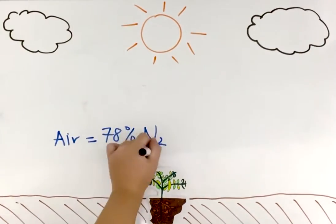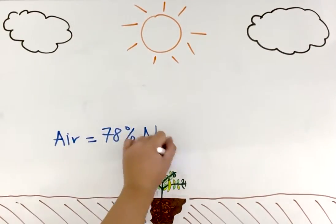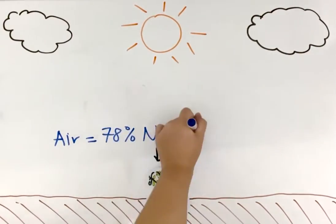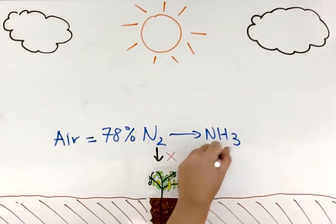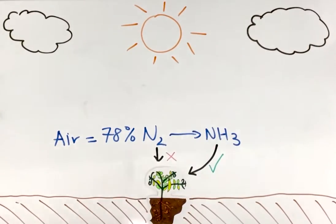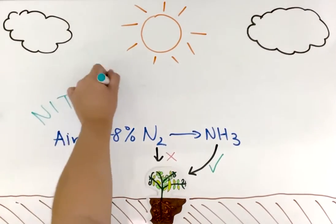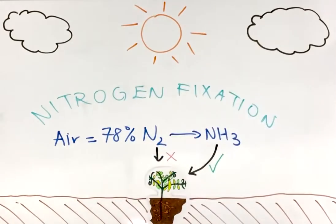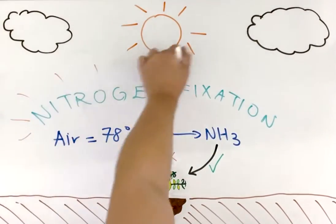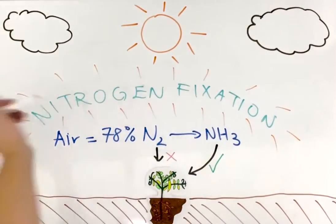Nitrogen makes up 78% of the air, but it exists in a form that cannot be used by plants. So, nitrogen must be reduced to the usable form ammonia. This is called nitrogen fixation.